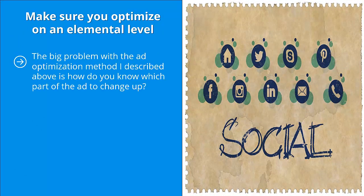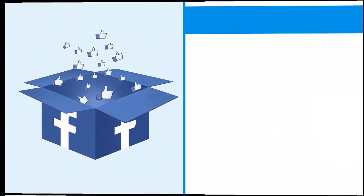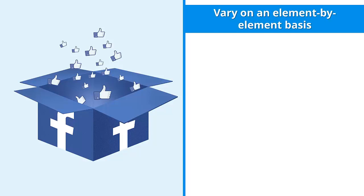Make sure you optimize on an elemental level. The big problem with the ad optimization method described above is: how do you know which part of the ad to change? Wholesale variations do not work — you can't just take an ad, see that it doesn't work, replace it with a completely different ad, and repeat. Even spending very little money, it still burns a tremendous amount of time, effort, and opportunities. You need a better way to turbocharge your results.